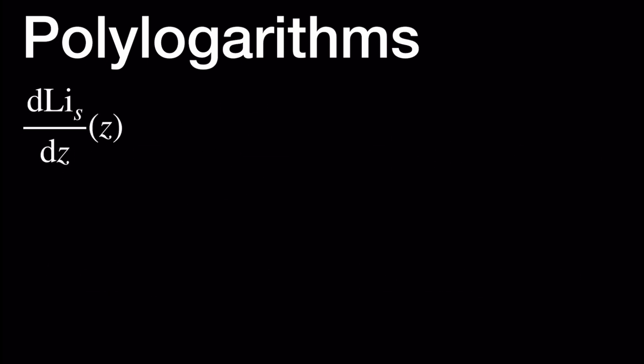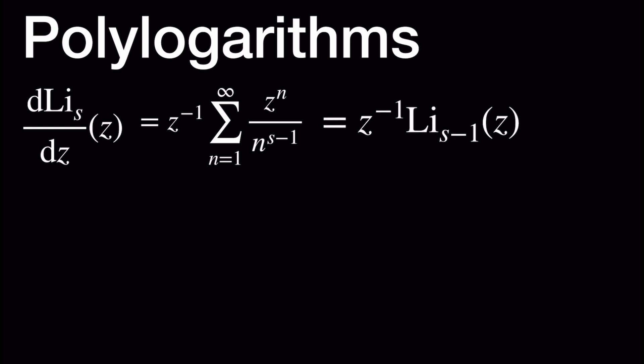If we differentiate Li sub S at Z, we're going to get Z to the negative 1 times the sum as n goes from 1 to infinity of Z to the n divided by n to the S minus 1. This sum can be written as Li sub S minus 1 evaluated at Z, so we have this nice relationship.